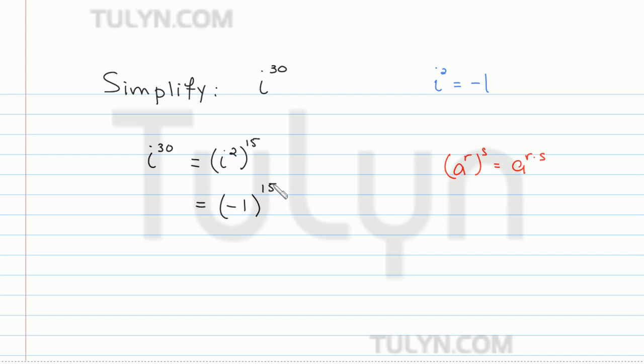And this is a lot easier to simplify, because negative 1 to the n equals negative 1 if n is odd, and equals positive 1 if n is an even number.